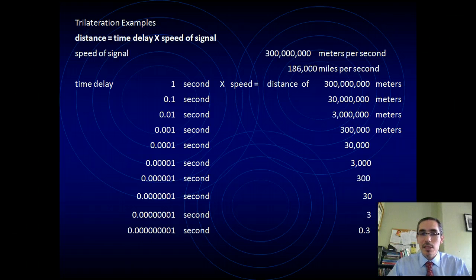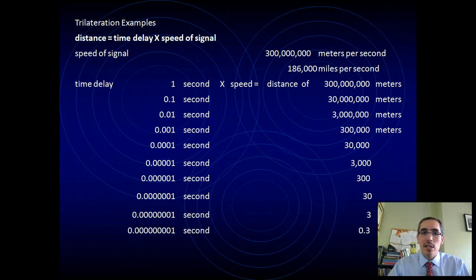What's significant about this system is that it requires an incredible degree of precision in order to work. So I said before that in order to figure out our distance from the satellites, we need to multiply the time delay, the amount of time it takes the signal to leave the satellite and arrive where we are, times the speed of that signal.